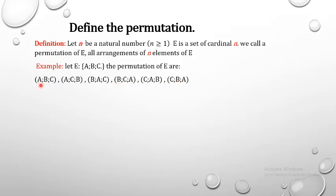We can write these cases systematically. Fix the element a and put bc; the second permutation reverses b and c, giving cb. Then fix b and put ac, then reverse a and c to get ca. Finally, fix c and put ab, then reverse a and b to get cba.